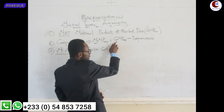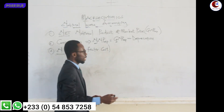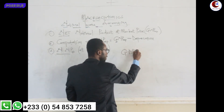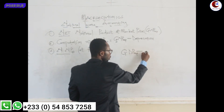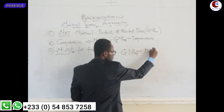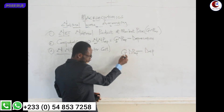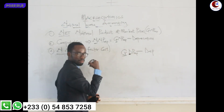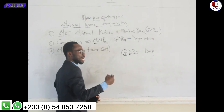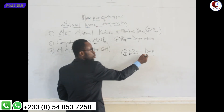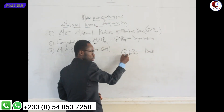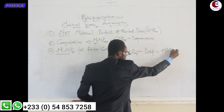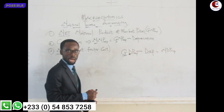Gross national products: whenever you subtract depreciation from gross you are going to get net. What you are saying is that whenever you subtract depreciation from gross it is going to give you net domestic product at market price.